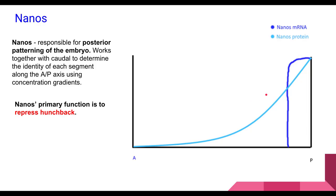In terms of nanos, the way it's expressed and the gradations formed are actually quite similar to bicoid. Nanos is responsible for posterior patterning versus bicoid which handles the anterior portion. Nanos works together with caudal to determine the identity of each segment along the anterior-posterior axis using concentration gradients formed when the proteins are translated. The primary function of nanos is to repress hunchback.